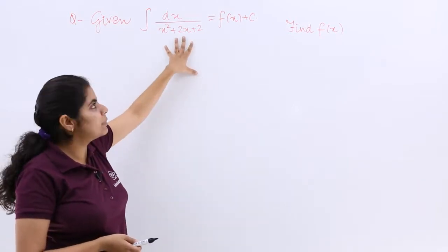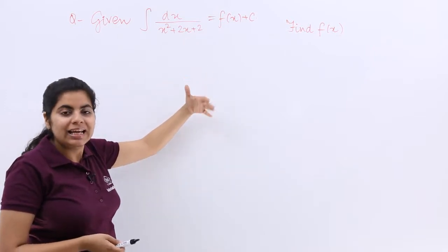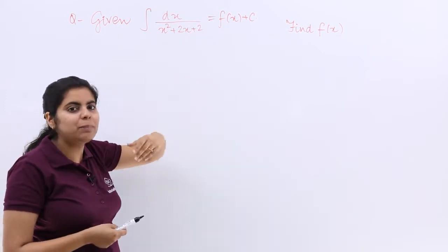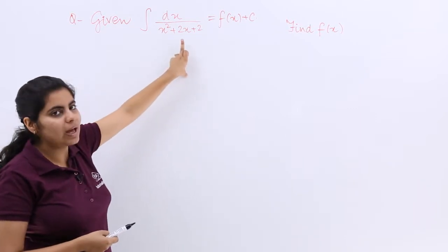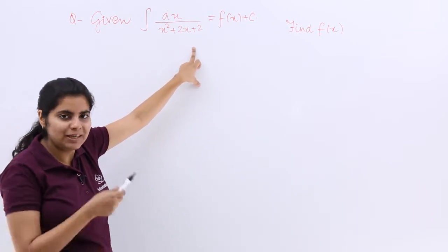As you can see, the denominator is something which is near about to a whole square. It can be converted to a whole square plus something. What? x square plus 2x plus 1 plus 1. Then what will happen? Let's see.